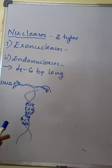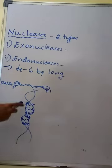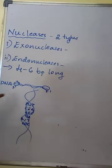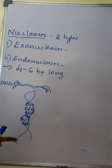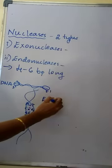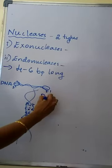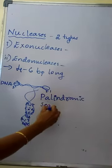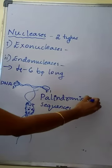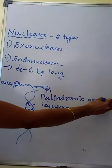Palindromic sequences means the two strands of the DNA in that particular region are identical when read both in the forward as well as in the backward direction. For example, palindromic nucleotide sequences.